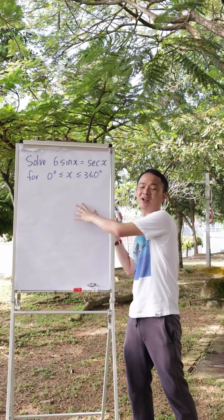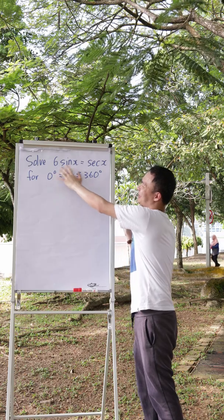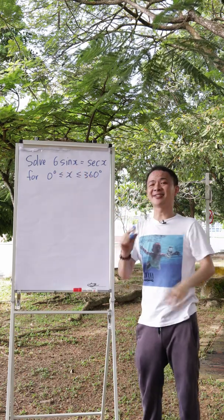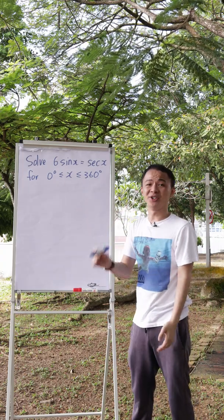Today I'm going to teach you how to solve this kind of trigonometry question. The question asks you to solve 6sine x equals to secant x. Because sine x and secant x are squared here, there's no formula you can apply into this equation.